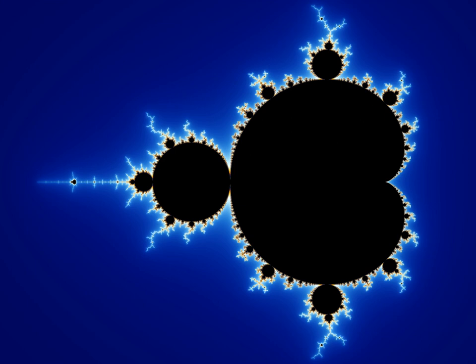Sphere eversion, that a sphere can be turned inside out in three dimensions if allowed to pass through itself but without kinks, was a startling and counter-intuitive result, originally proven via abstract means, later demonstrated graphically.